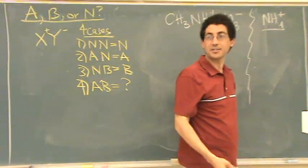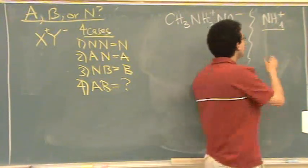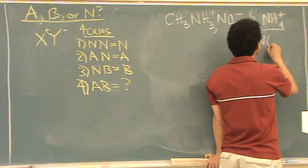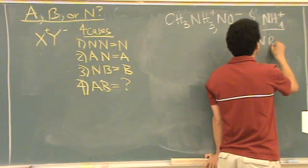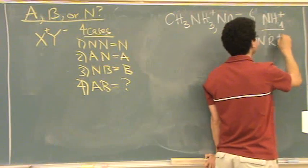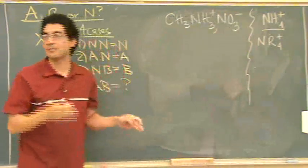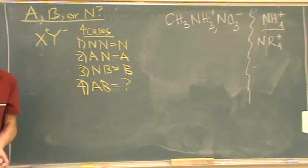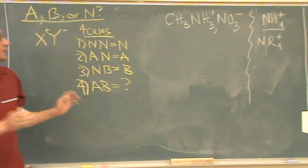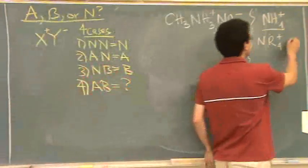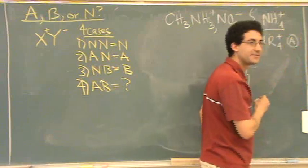Yeah, it's an acid. The conjugate base is NH3. So any of these, I'll just put a variable, I'll call it R. Okay, R can be anything. It can be a hydrogen, it could be carbons, whatever. If there's four of them, this is an acid.